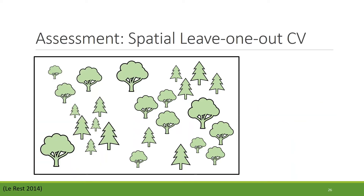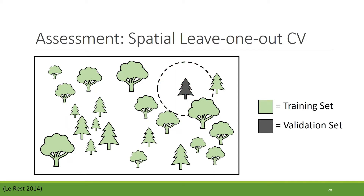The second spatial cross-validation method is more similar to leave-one-out cross-validation, which is just k-fold when each observation gets its own fold. In spatial leave-one-out, we still let each tree be its own fold, but we also incorporate a buffer region around each tree. Each fold ends up looking like this, and we'd average the results for all 25 trees in our dataset.